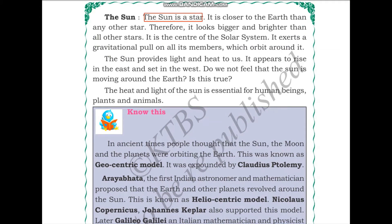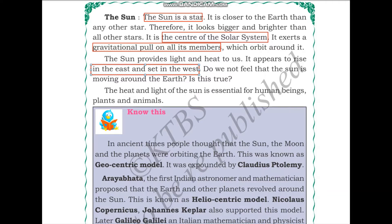The Sun is the center of the solar system and exerts a gravitational pull on all its members. Gravitational pull is that pull exerted by any body that has mass — you will learn more about it in higher classes. The Sun provides light and heat to us. It appears to rise in the east and set in the west. Here you can see images of sunrise and sunset — every day we see sunrise in the east and sunset in the west.